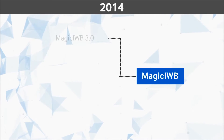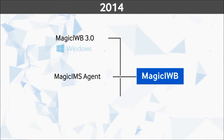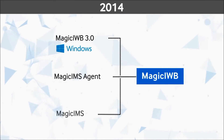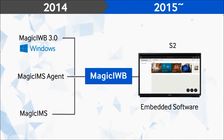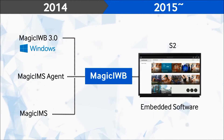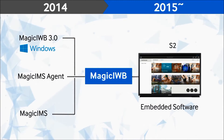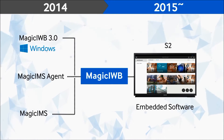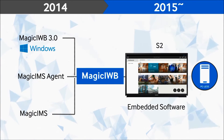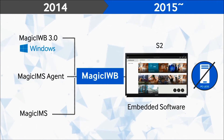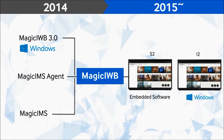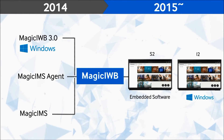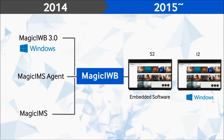Until 2014, we only had Magic IWB software which worked with only Microsoft Windows. But now, we have a new embedded software, IWB S2, which does not require any additional PC. And Windows-based software has been upgraded to Magic IWB i2.